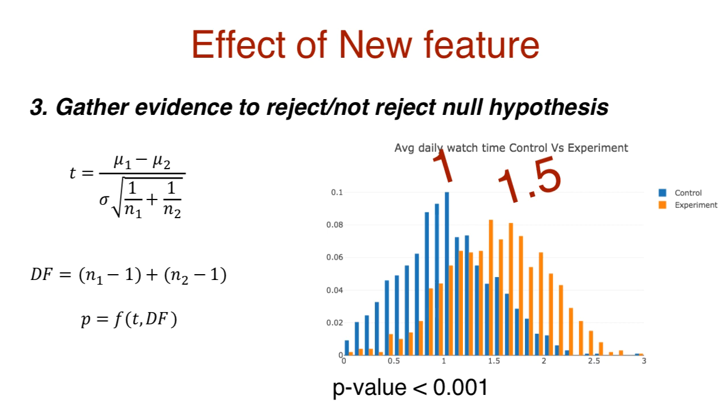And so, the experiment users are certainly on Netflix 30 minutes longer than the average control user. The new feature thus has some effect. Now, will they launch this feature? Well, that depends on other factors that may be influencing watch time.